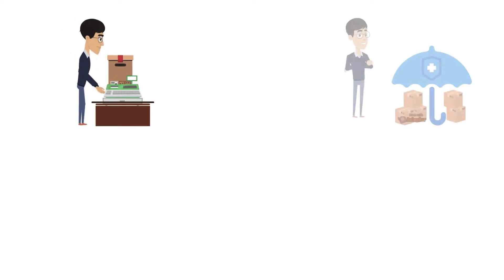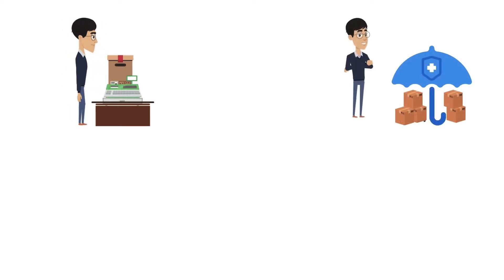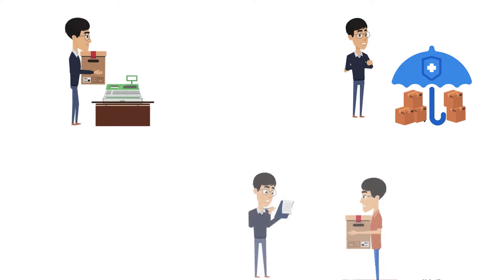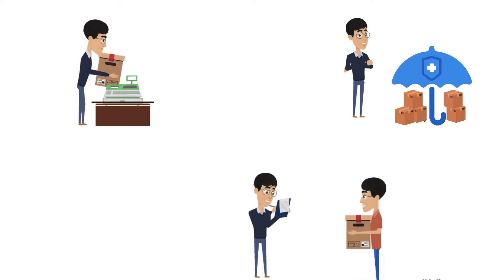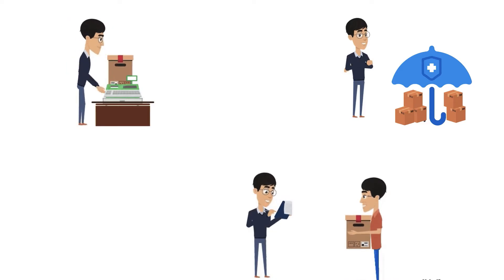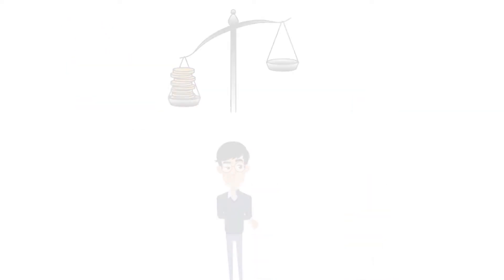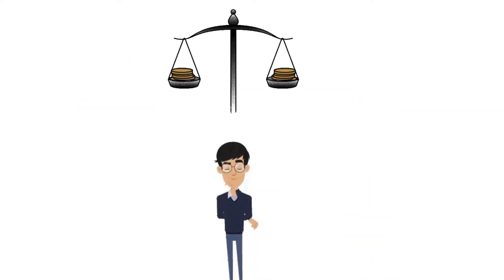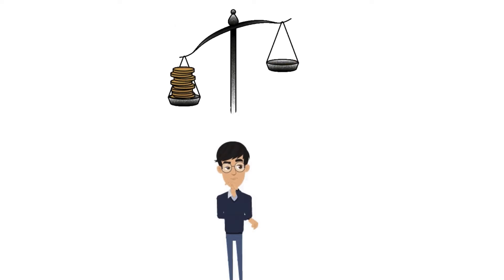A lot of other factors like product weight and dimensions, insurance, and special services like adult signature are considered in calculating the accurate shipping cost — saving you from overcharging or undercharging your customers.